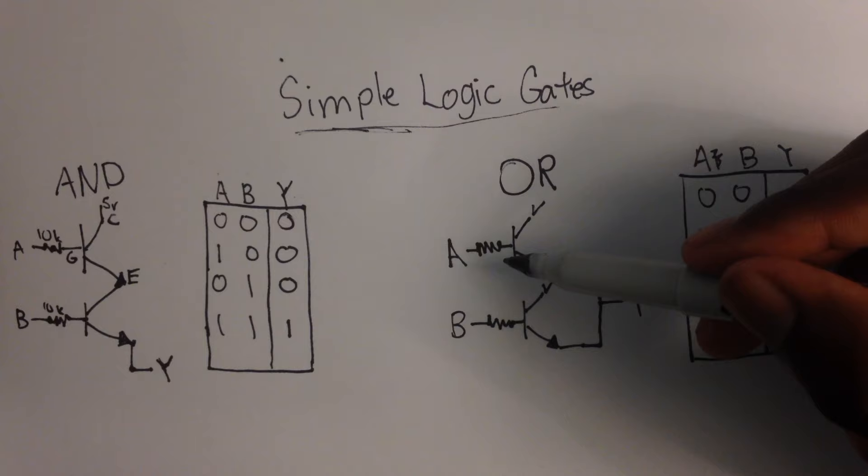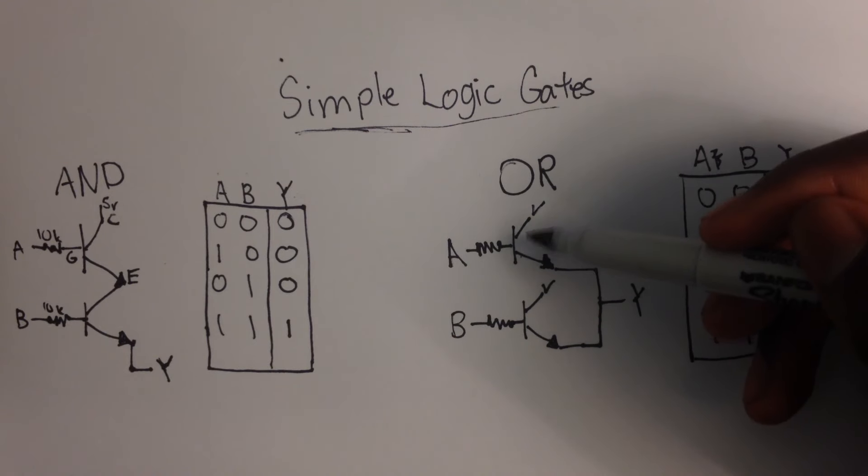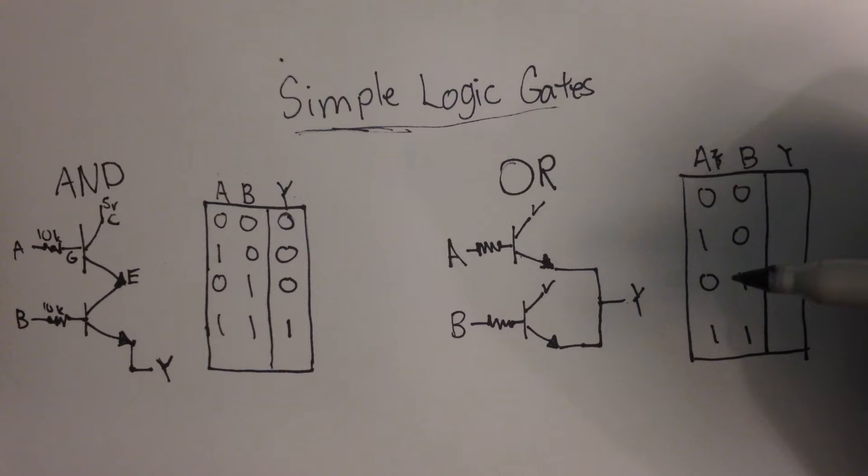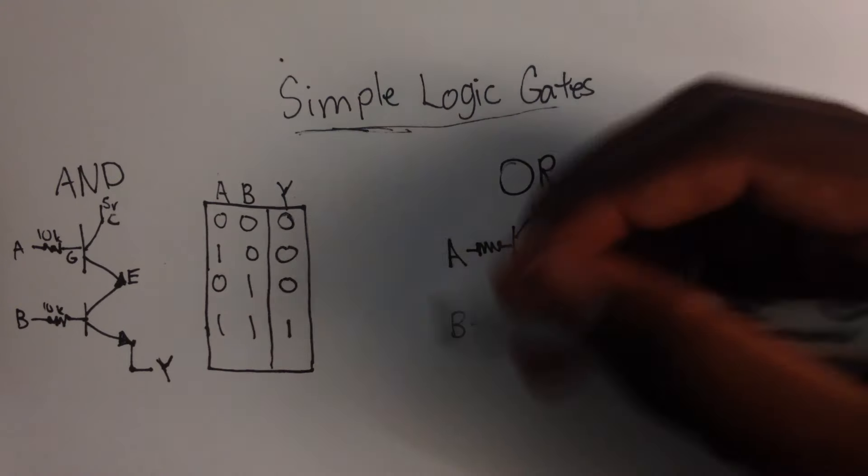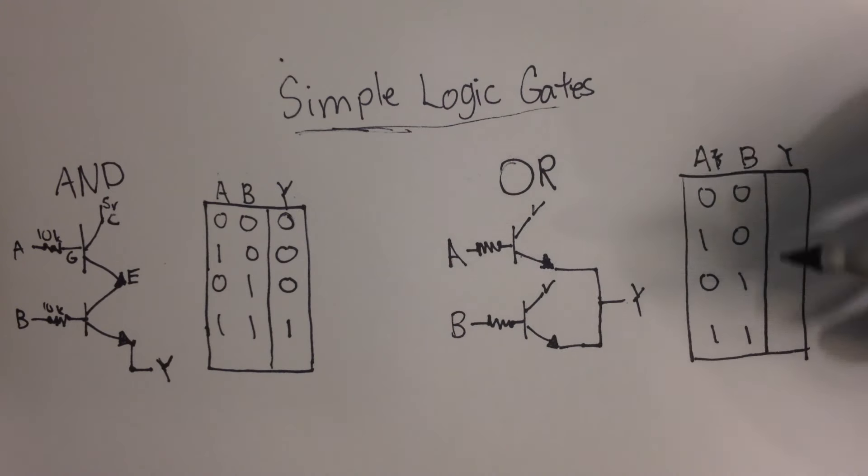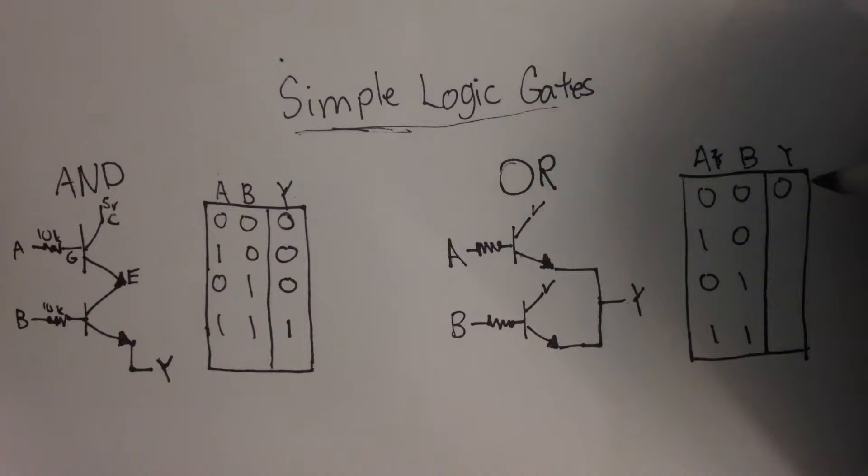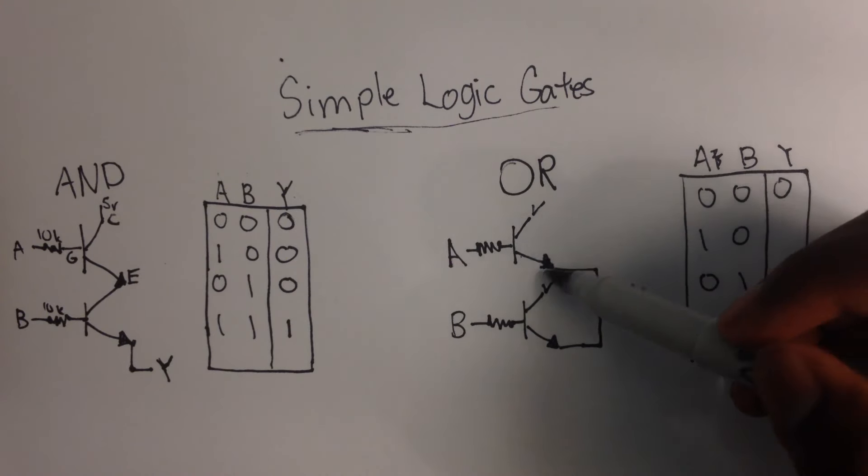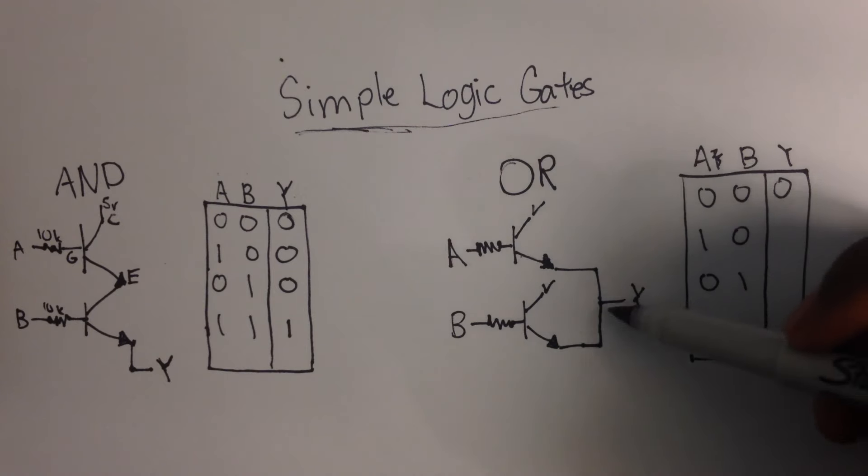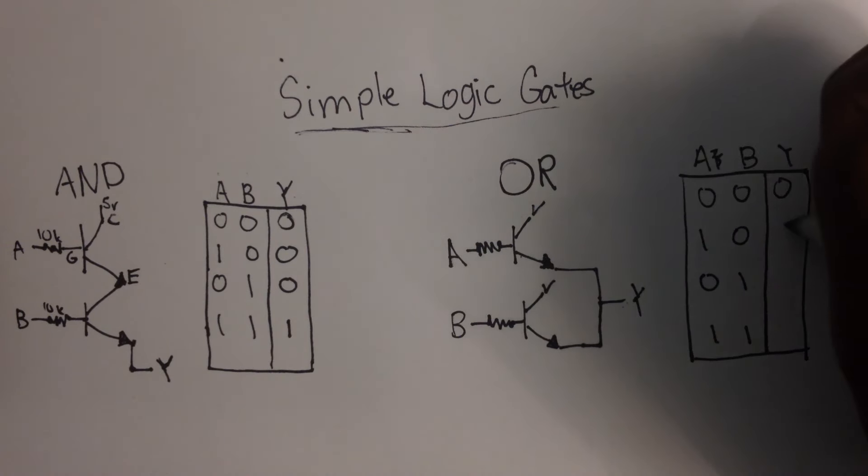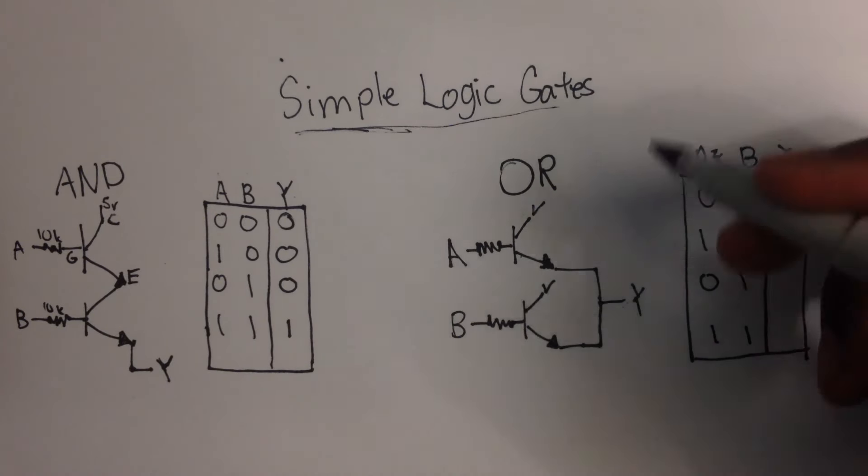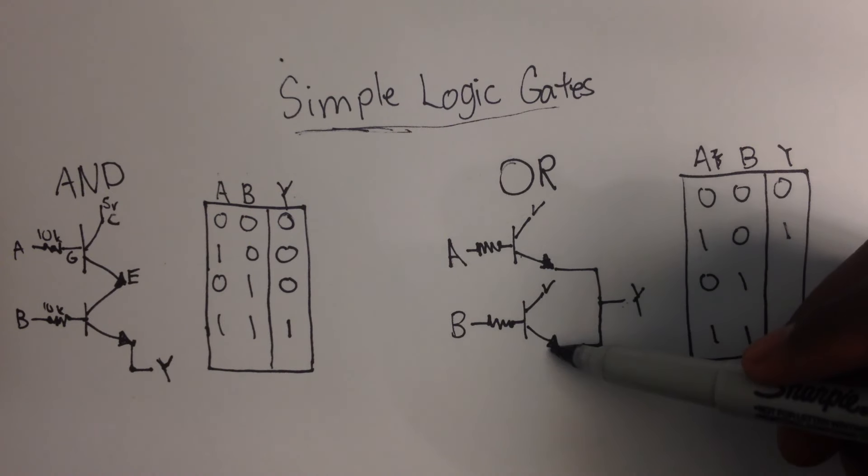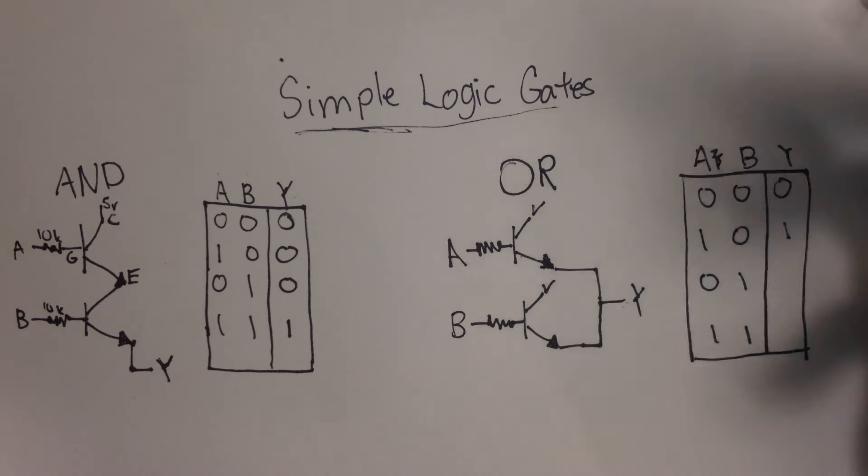So technically, if A is 1, this transistor will be true. So this output will be true, so Y will turn on. So, 0, 0, obviously there's going to be no voltage at all. So that's going to be 0. But 1, 0, this is 1, so this transistor is 1. So emitter is 1, so Y is 1. B, same thing. This is 1, this is 1, so this will be 1.